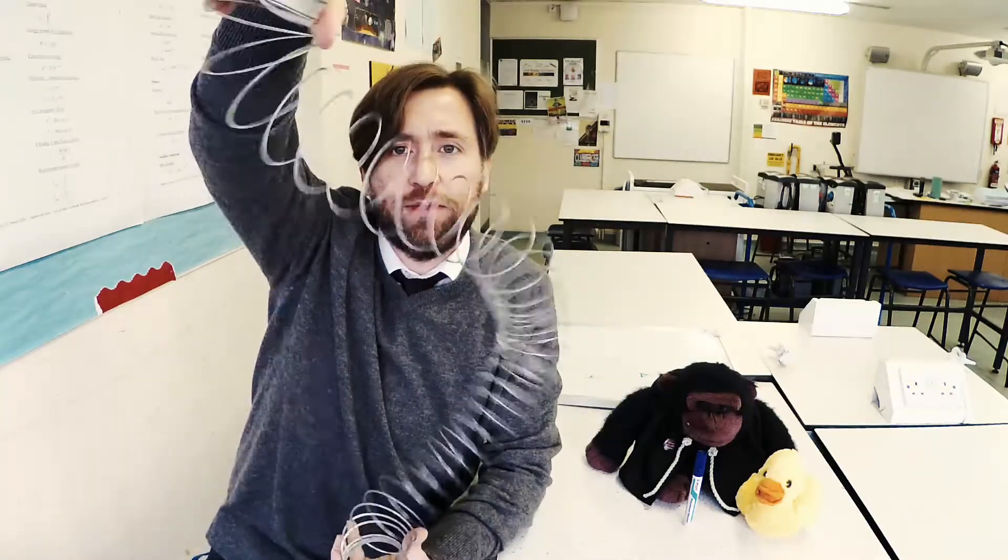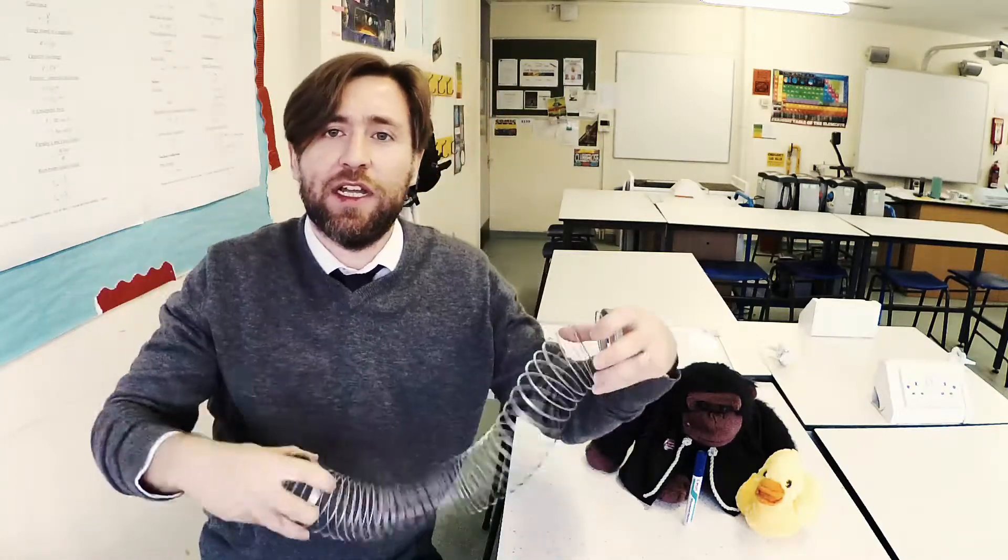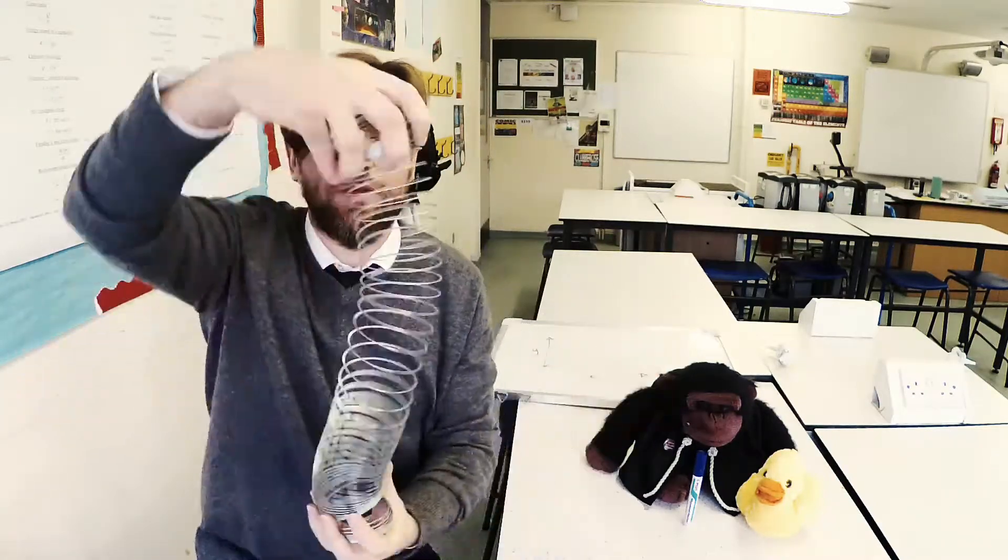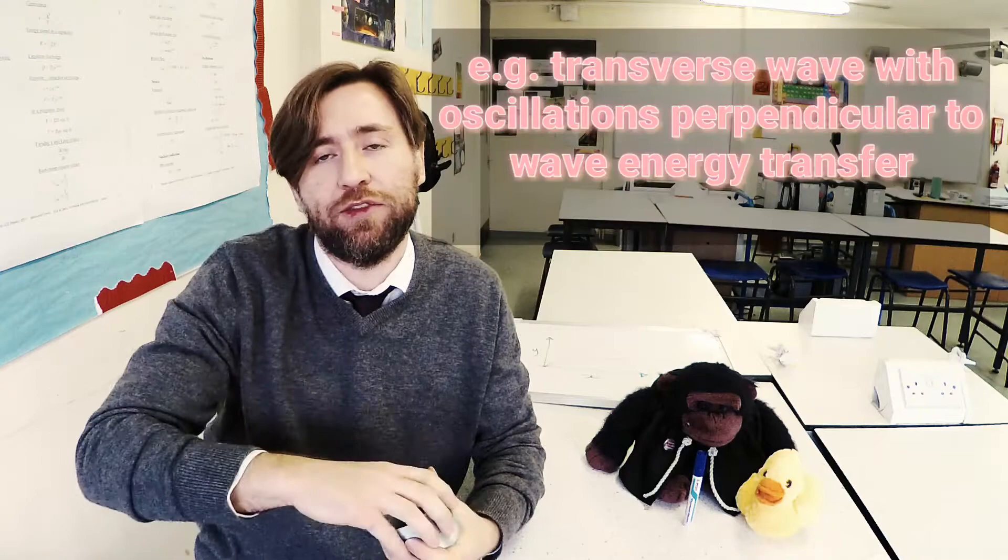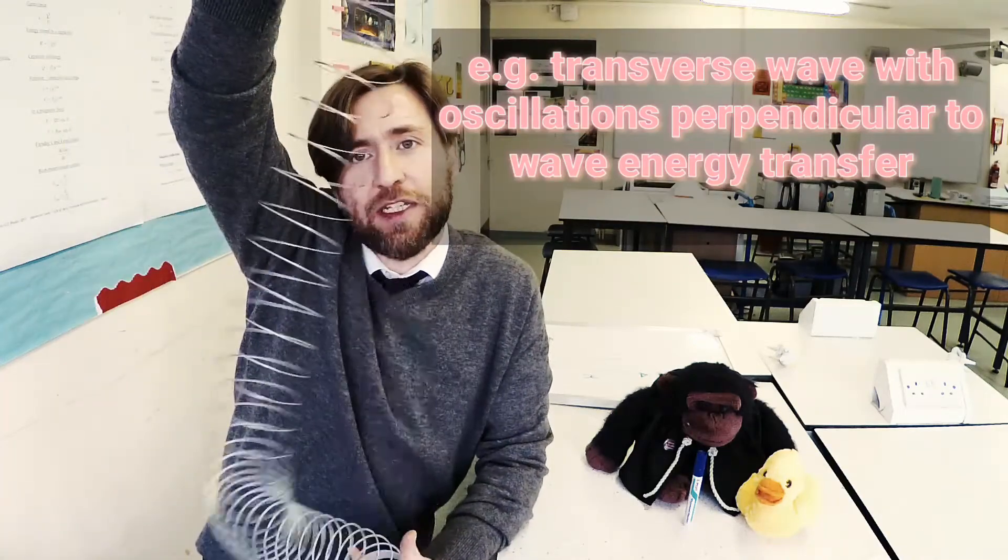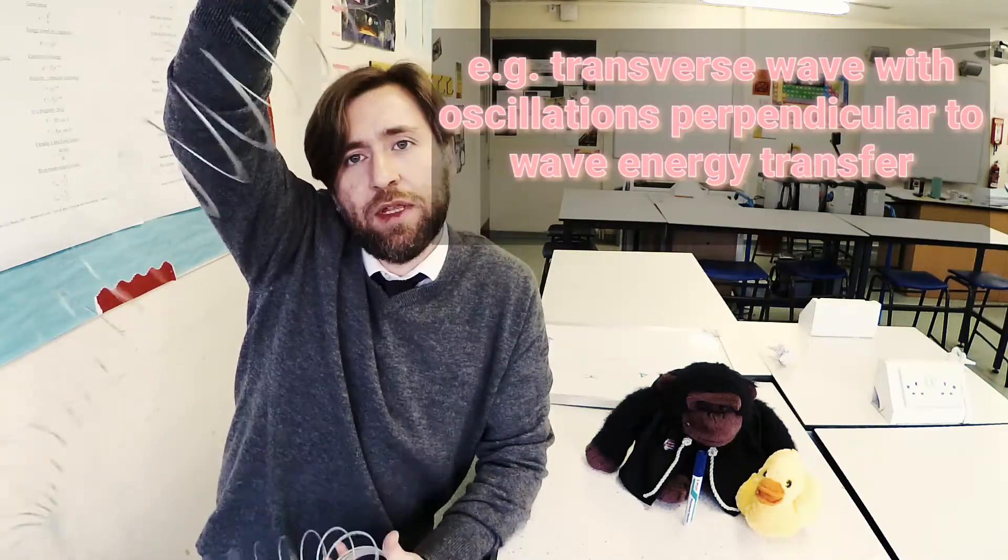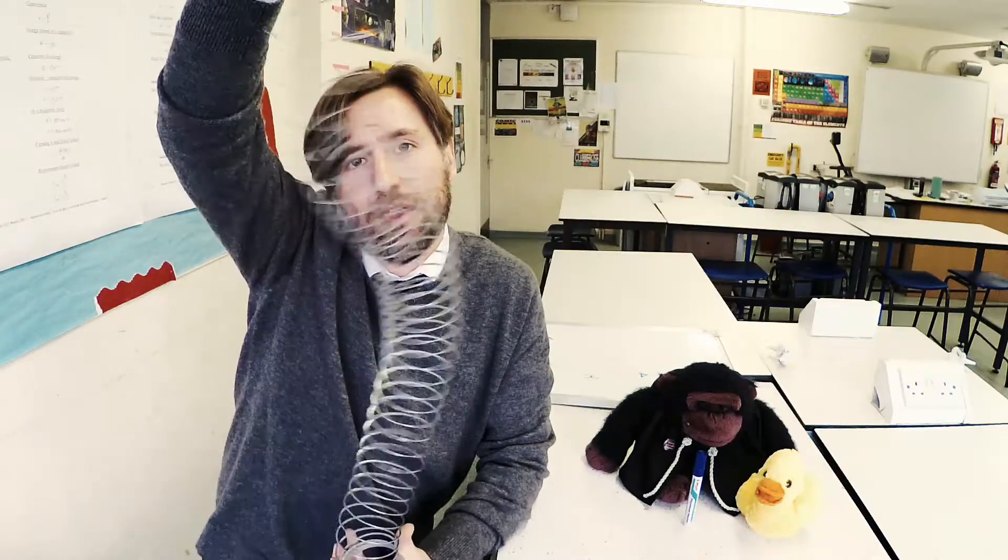Now this is actually a transverse wave, that one I've just shown you. Because the oscillations are at right angles to the direction of wave energy transfer, or the direction of the travel of the wave. So in this case, the wave is going up and down, and the oscillations are going side-to-side.